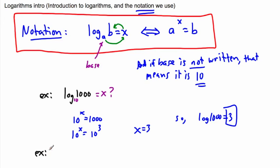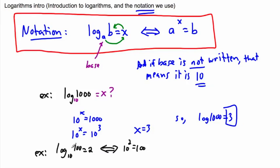Let's do another example. We can rewrite: log base 10 of 100 equals 2. Let's see if that's a correct statement. That should be equivalent to 10 to the power of 2 equals 100. Do you see how that is actually the same thing? 10 to the power of 2 is 10 times 10, that's 100. So this is just showing you that these are the same thing. When you see a log, even if the base isn't written — if it just says log of 100 — you'd know that equals 2, because 10 to the power of 2 equals 100.